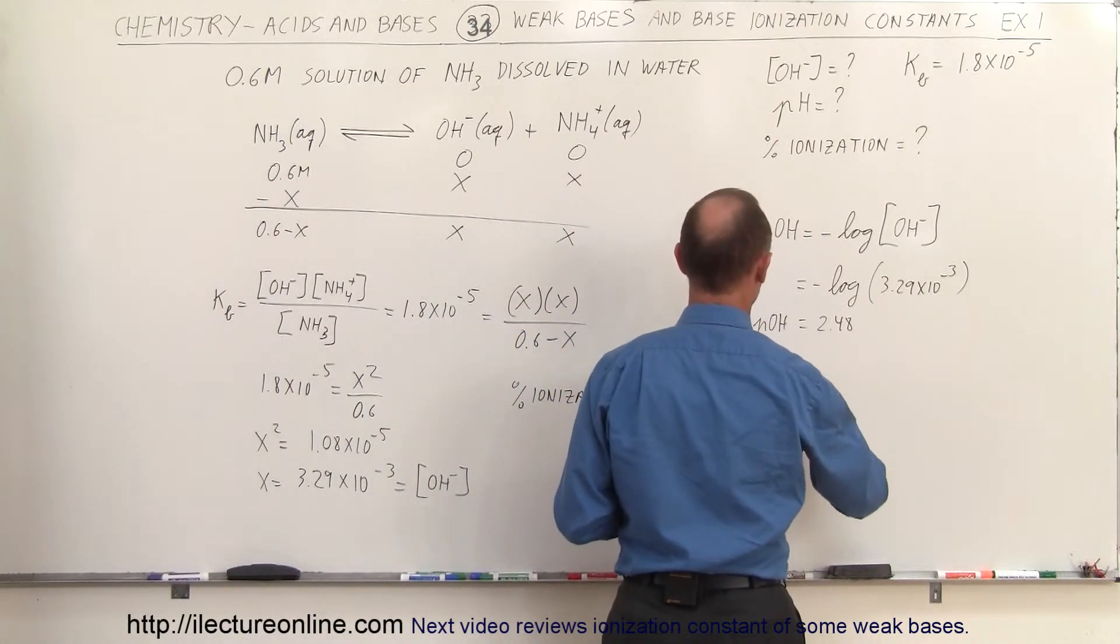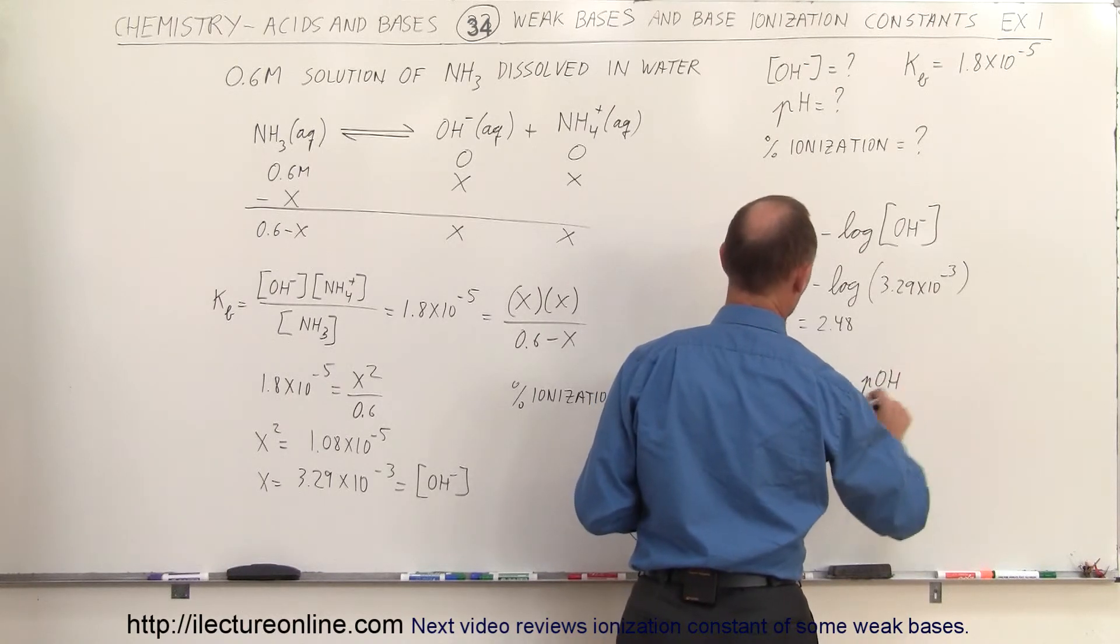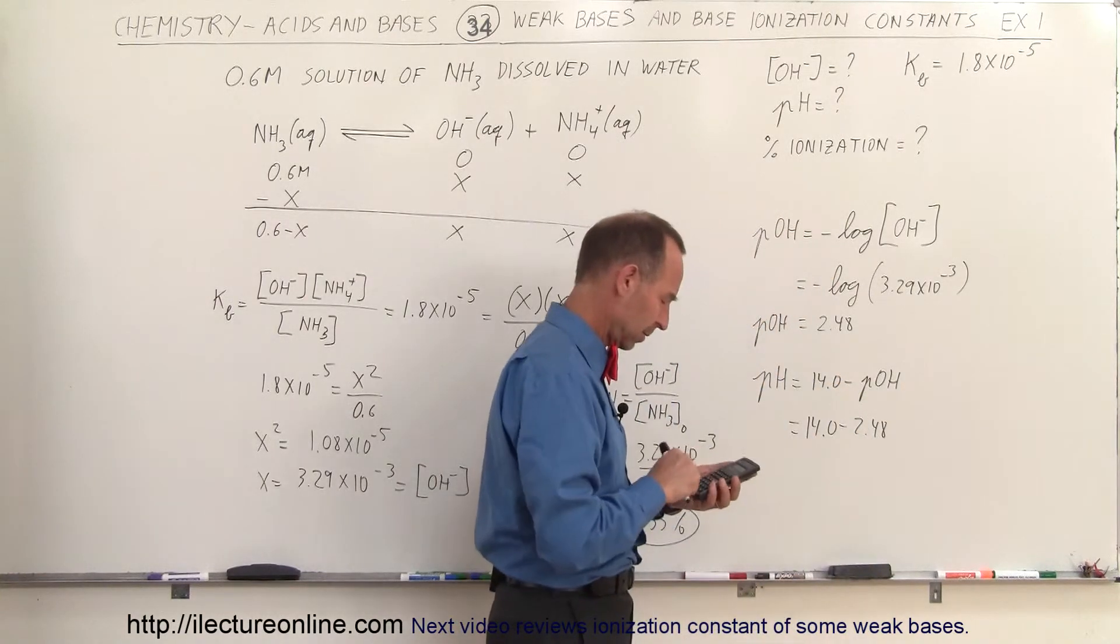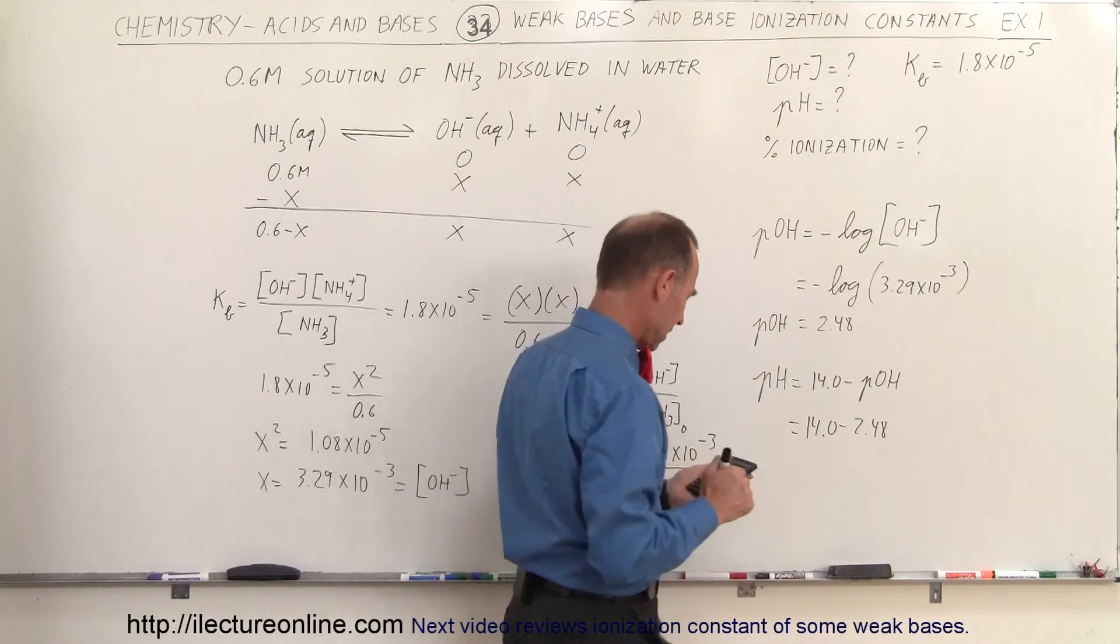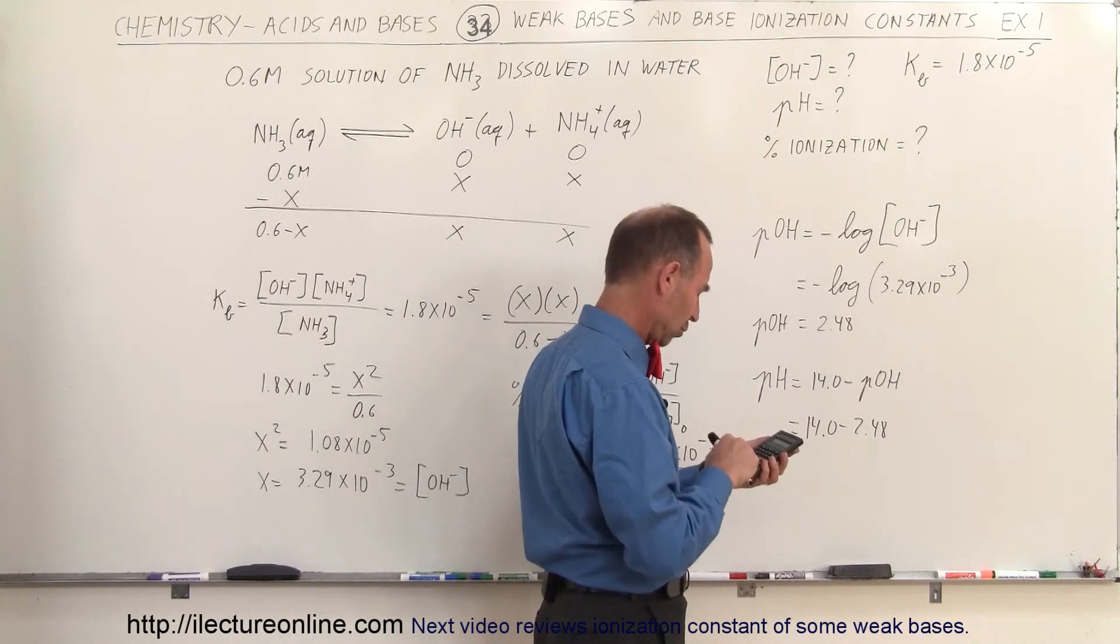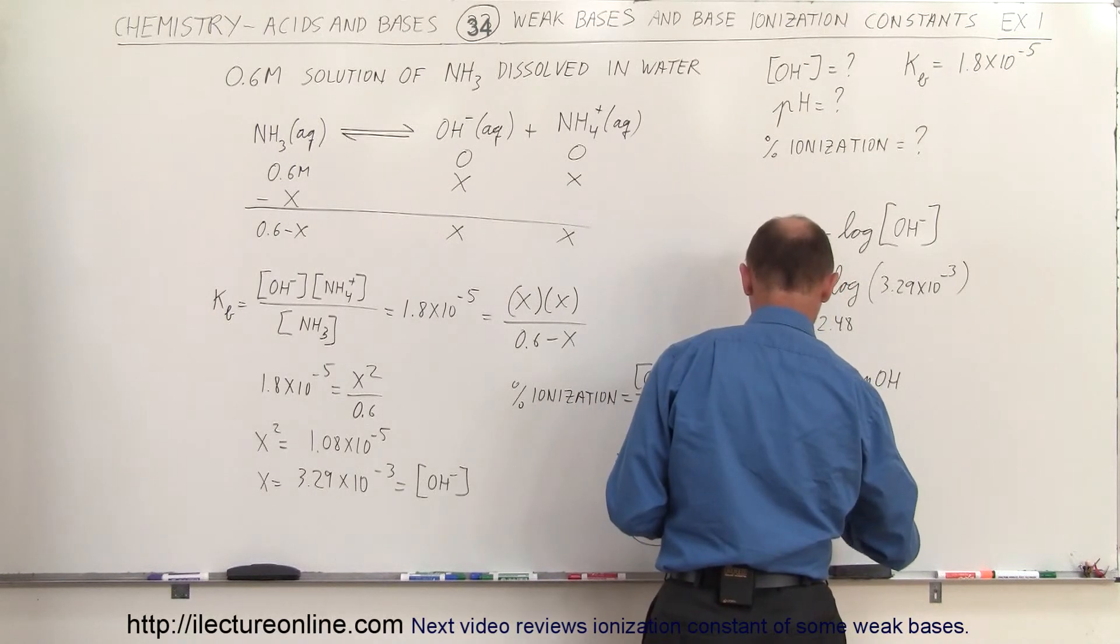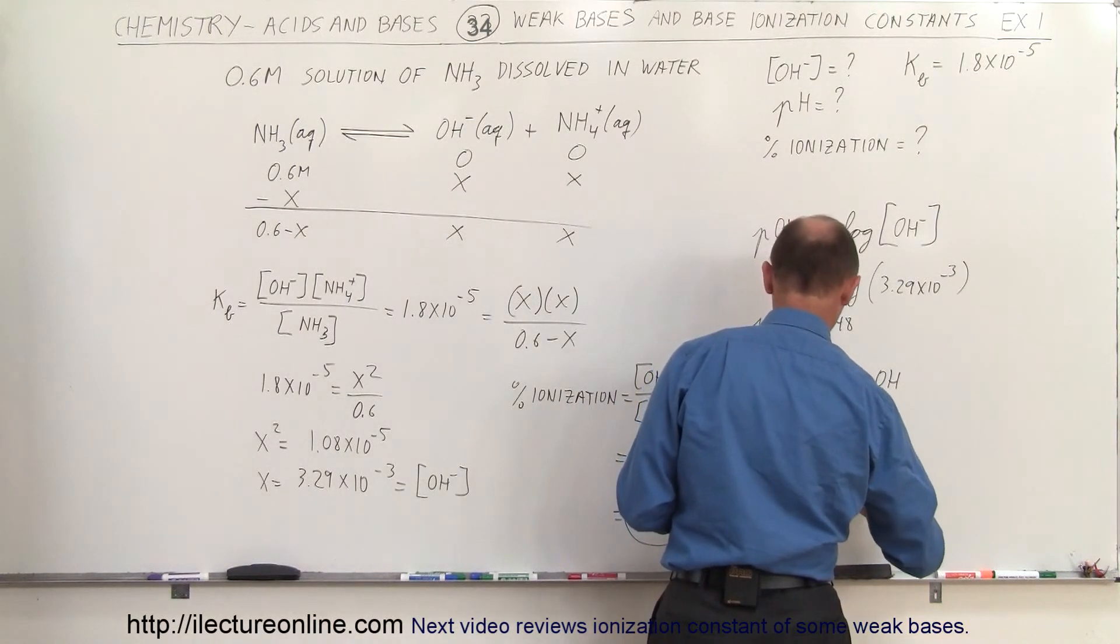To find the pH, that is equal to 14.0 minus the pOH. In this case, that would be 14.0 minus 2.48. And that gives me, 14 minus 2.48 equals, and so the pH is equal to 11.52.